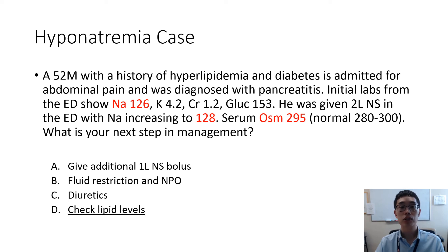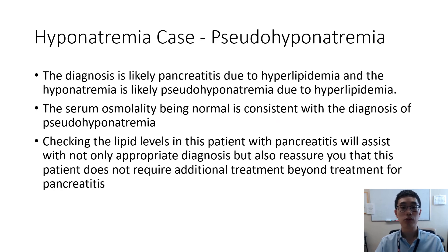If you selected answer choice D to check lipid levels, congratulations — this is the correct answer. In this case, we can see that the serum osmolality is in the normal range, which means that this is likely a case of pseudohyponatremia. We should be looking for an ineffective osmol that is interfering with our serum sodium measurement, typically either an increase in protein or lipid levels. The presentation of pancreatitis is likely due to high triglyceride levels, which can increase the solid state and cause a pseudohyponatremia.